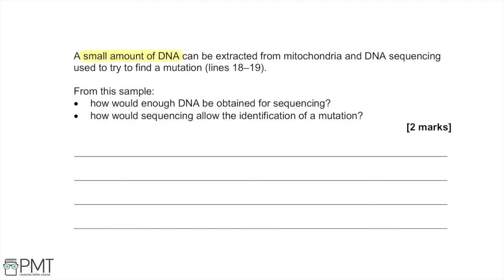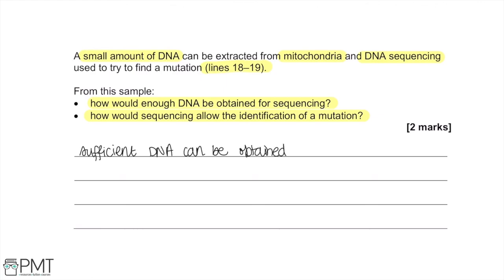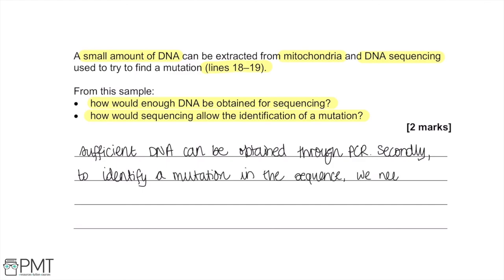A small amount of DNA can be extracted from mitochondria and DNA sequencing used to find a mutation. Sufficient DNA can be obtained through PCR (polymerase chain reaction) to amplify the sample. To identify a mutation using sequencing, the DNA sequence is compared with normal DNA.